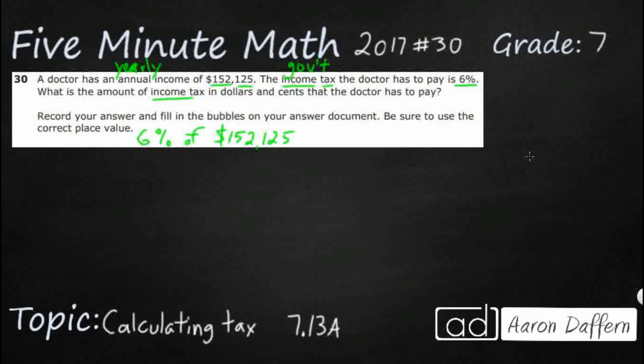We could, if we wanted to make a proportion here. We could do this: 6% turned into a fraction would be 6 over 100. And then your 100% is this full thing right here, so 152,125. And then let's say X is the 6% that we're looking for.